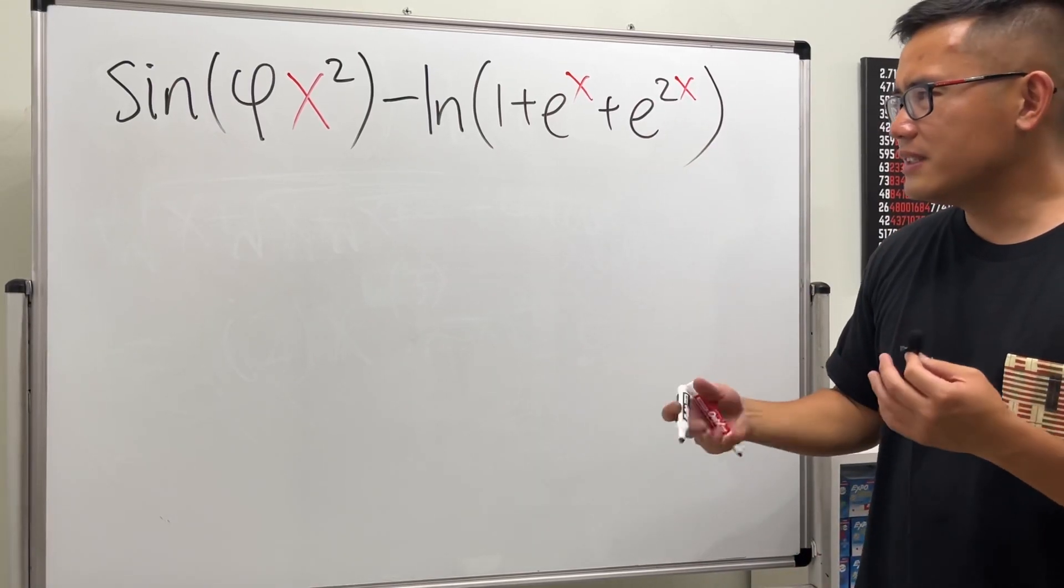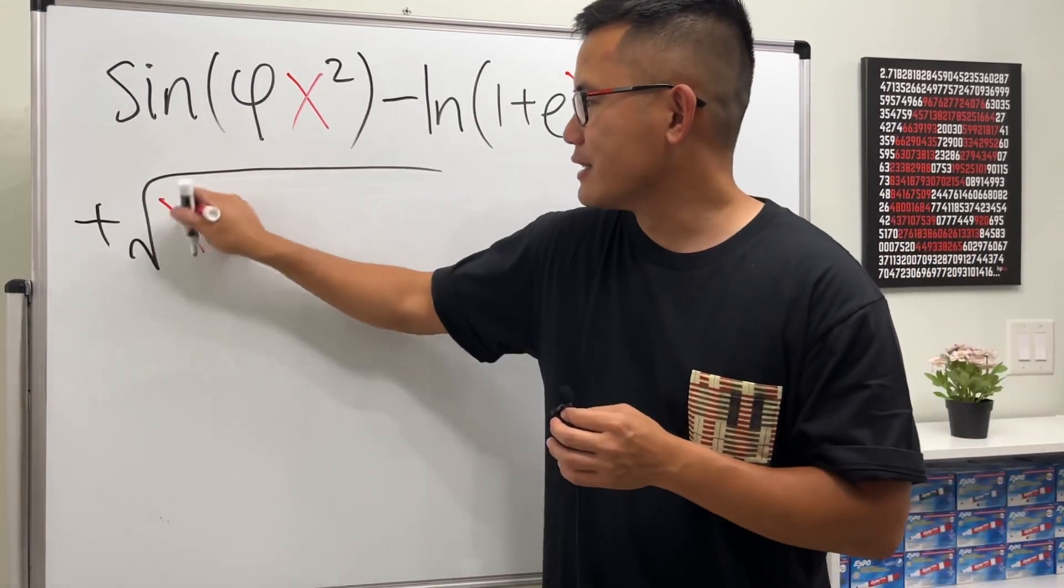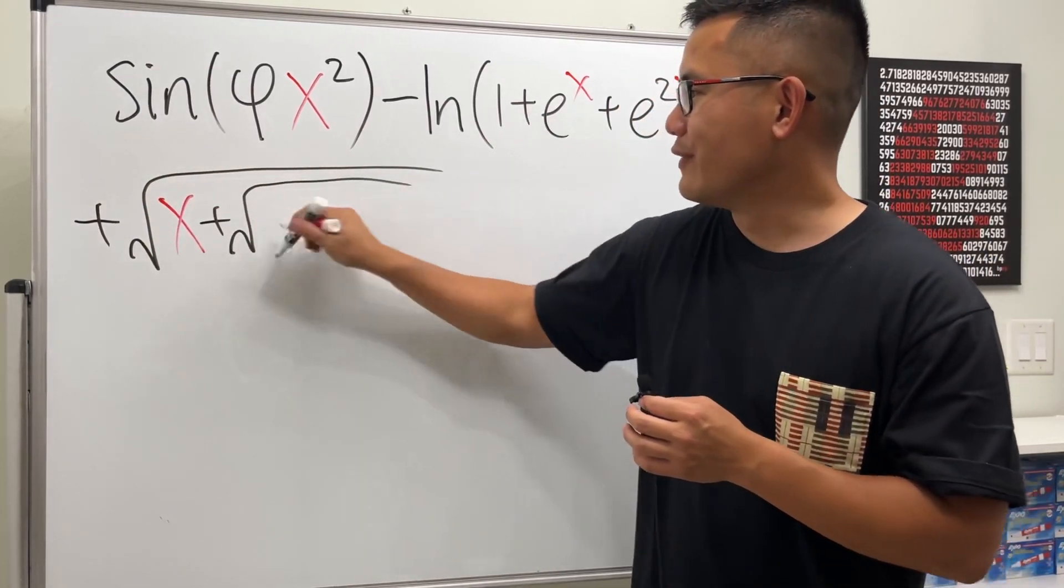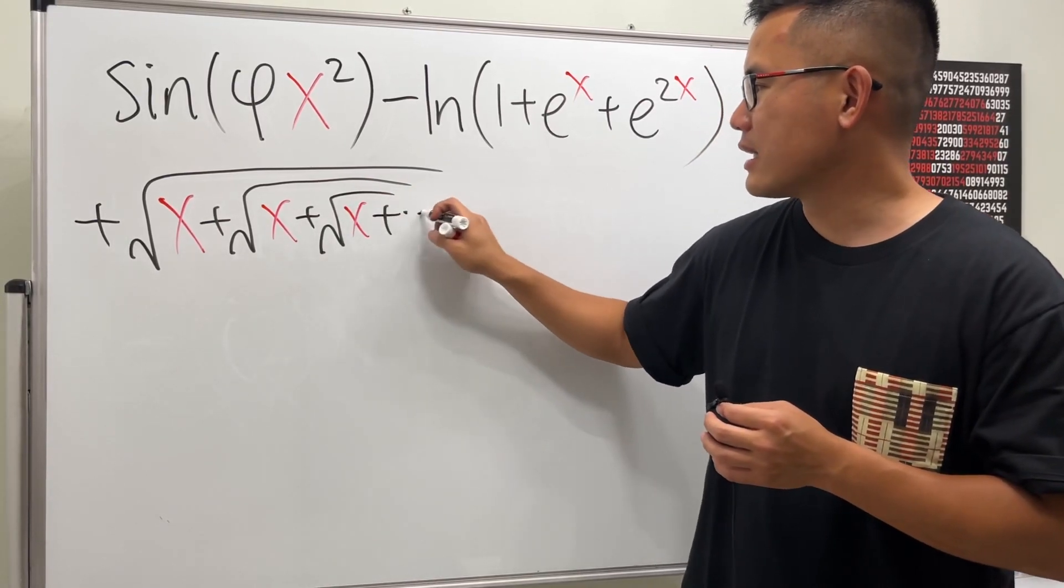And we should also have some infinite nested square roots, so let's go ahead and put down plus square root of x plus the square root of x plus the square root of x and then plus dot dot dot.